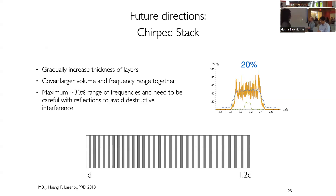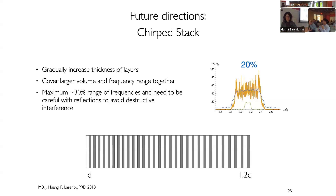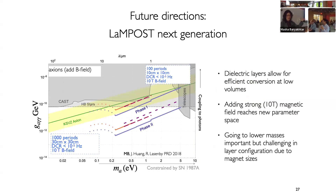We can do a chirp stack, which is basically taking the previous analysis but spreading out the spacing of the layers by about 20 to 30%. This is a way to scan without having to swap out things in your experiment. The power as a function of mass will be a little ugly, but you can hopefully characterize it with enough optical measurements and get a broad signal. Ultimately, we think you can reach new axion parameter space with bigger stacks — these are projections of what one could do with current detector sensitivities but larger stacks and a magnetic field.